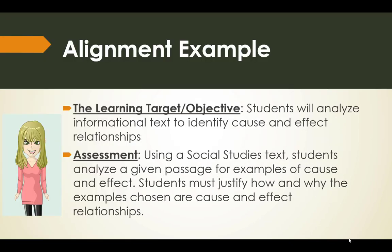An example of this would be: the learning target or objective is "students will analyze informational text to identify cause and effect relationships." So the assessment would state: using a social studies text, students analyze a given passage for examples of cause and effect. Students must justify how and why the examples chosen are cause and effect relationships.